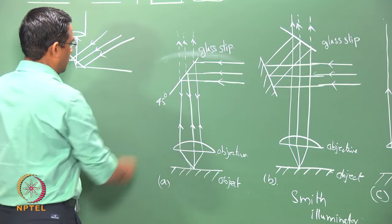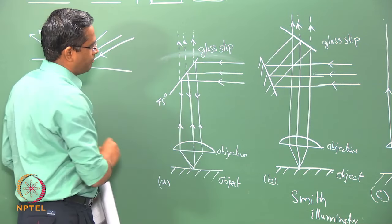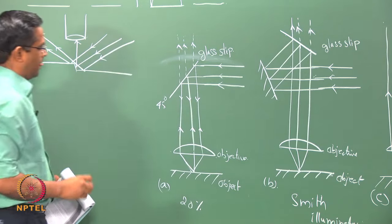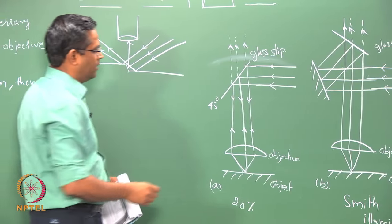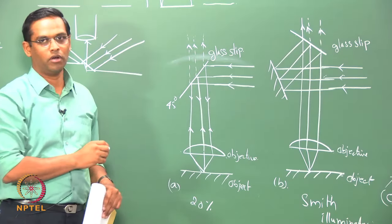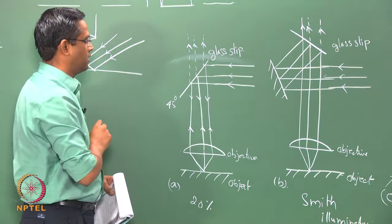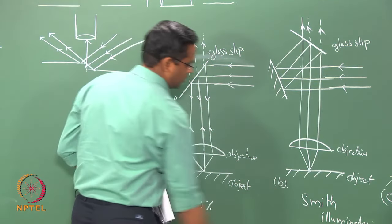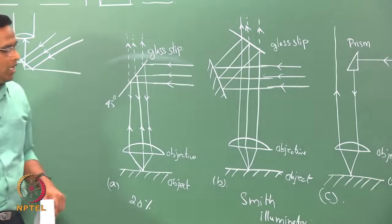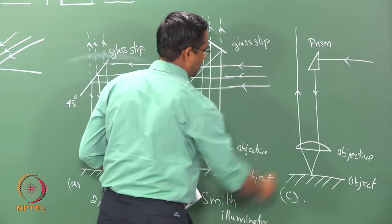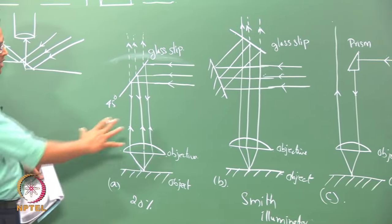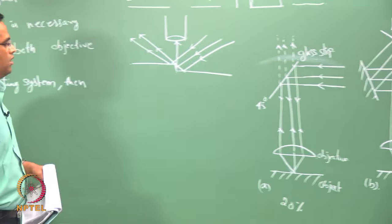You have these three kinds of illumination possible in the conventional metallurgical microscope. With the inclined glass slip illumination, only about 20% of the light is used for image formation. The Smith Illuminator is used because with a polarized light, the inclined glass slip causes the plane of polarization to rotate — and this design overcomes that. More intense illumination is possible by introducing a prism in the optical tube, but it also obstructs the ray path in the tube. These are the primary illumination paths considered for the conventional metallurgical microscope.